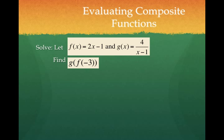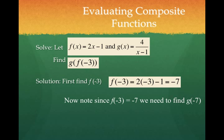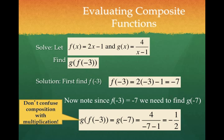So where am I plugging negative 3? Well note the negative 3 is next to f, so I'm plugging negative 3 into f and I'm getting negative 7. What am I going to do with negative 7? Negative 7 is what I'm sending into g. So I plug negative 7 into g and I get negative 1 half.